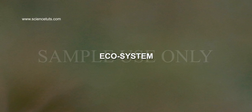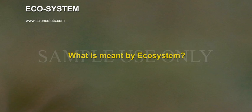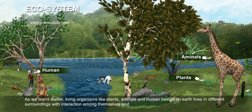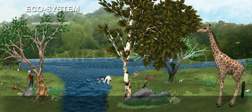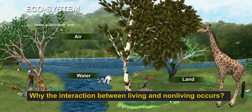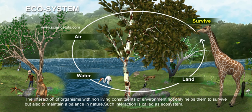Now let us discuss about ecosystem. What is meant by ecosystem? As we learnt earlier, living organisms like plants, animals and human beings on earth live in different surroundings with interaction among themselves and also with non-living things like air, water and land. The interaction of organisms with non-living constituents of environment not only helps them to survive but also to maintain a balance in nature.